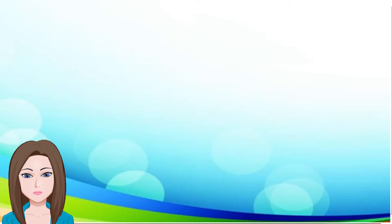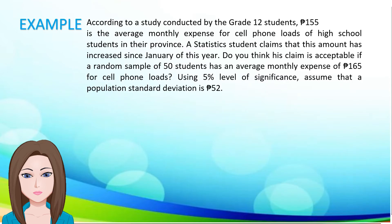To deepen our understanding, let us use this example. According to a study conducted, 455 pesos is the average monthly expense for cell phone loads of high school students in the province. A statistics student claims that this amount has increased since January of this year. Is his claim acceptable if a random sample of 50 students has an average monthly expense for cell phone loads? Using a 5% level of significance, assume that the population standard deviation is 52 pesos.